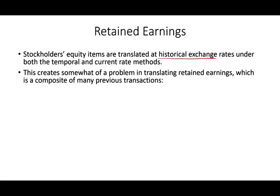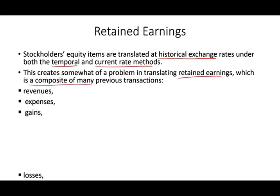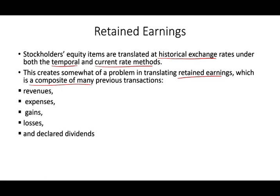However, whether you're using the temporal or the current method, this creates a problem in translating retained earnings, which is a composite of many previous transactions such as revenues, expenses, gains, losses, and declared dividends, as well as others. But those are the main accounts that affect retained earnings.